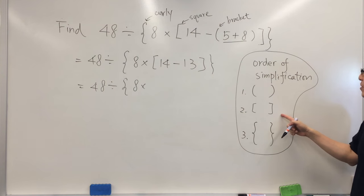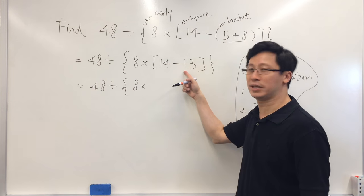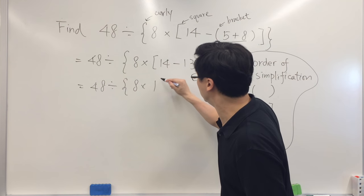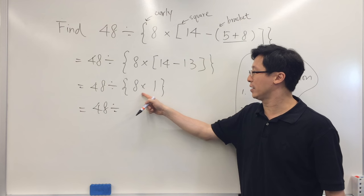5 plus 8, we get 13. And next we can move on to the square bracket. Simply follow the order: 14 minus 13, we get 1.